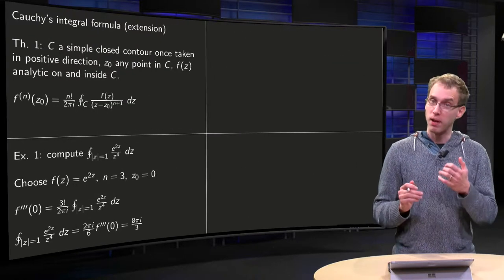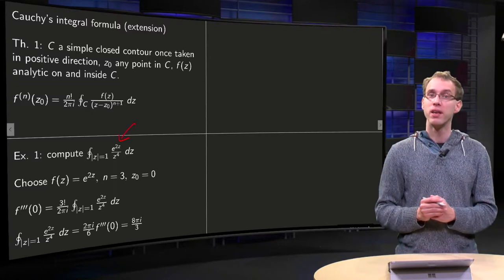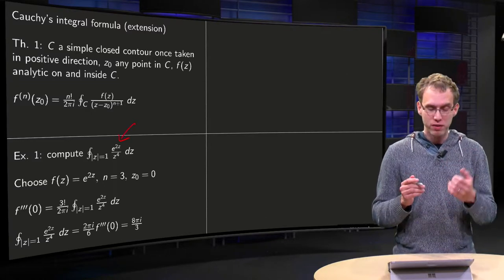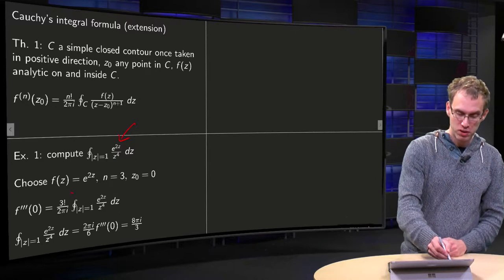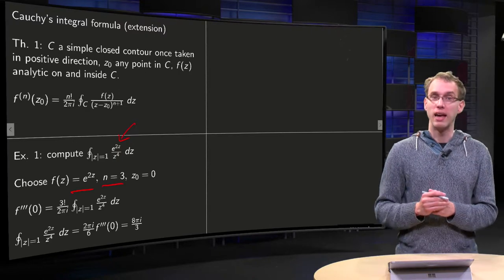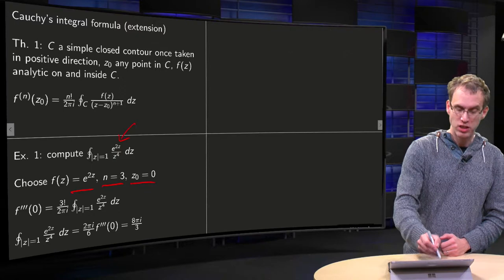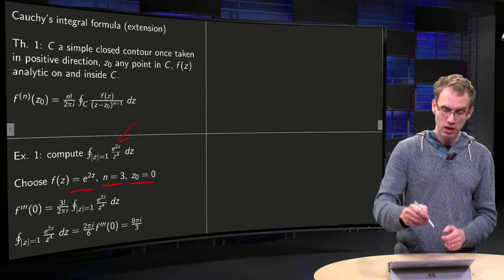So how can we apply it? For example, if you want to compute this integral over there, then we see, if we take as a function e to the power 2z, which is nice and analytic, if you plug in n equals 3 in Cauchy's integral formula, and choose z0 equals 0, so use those data,